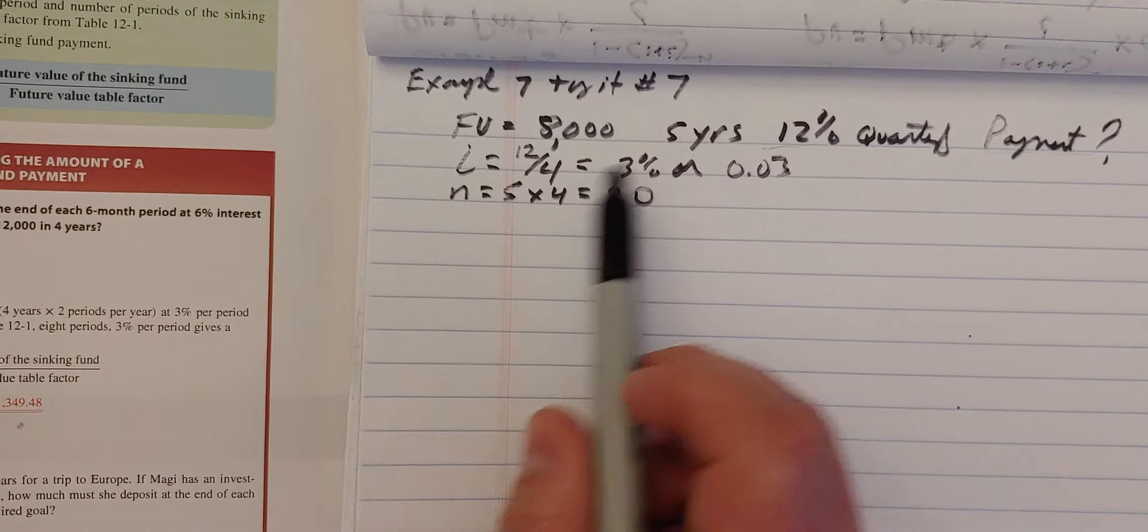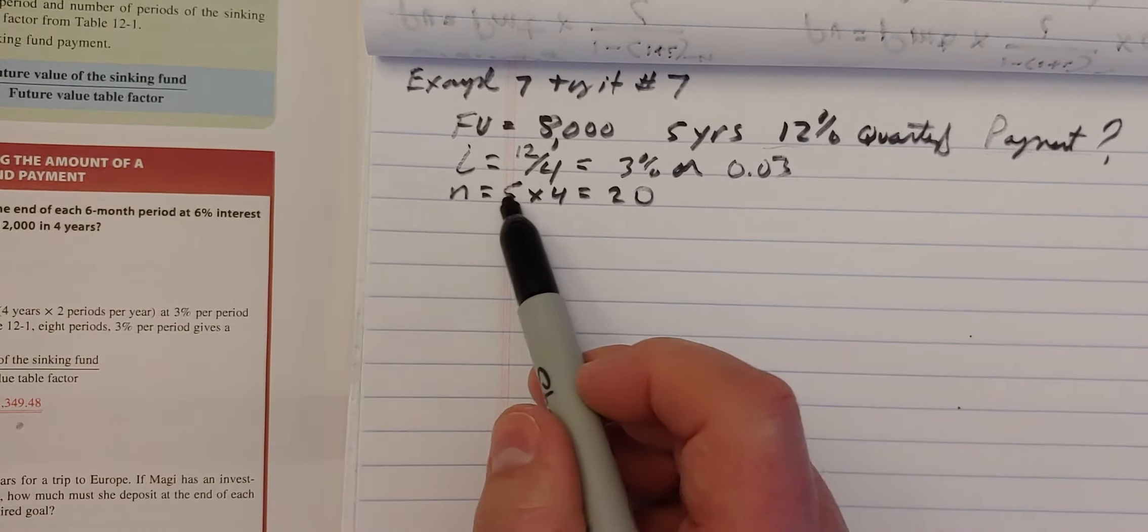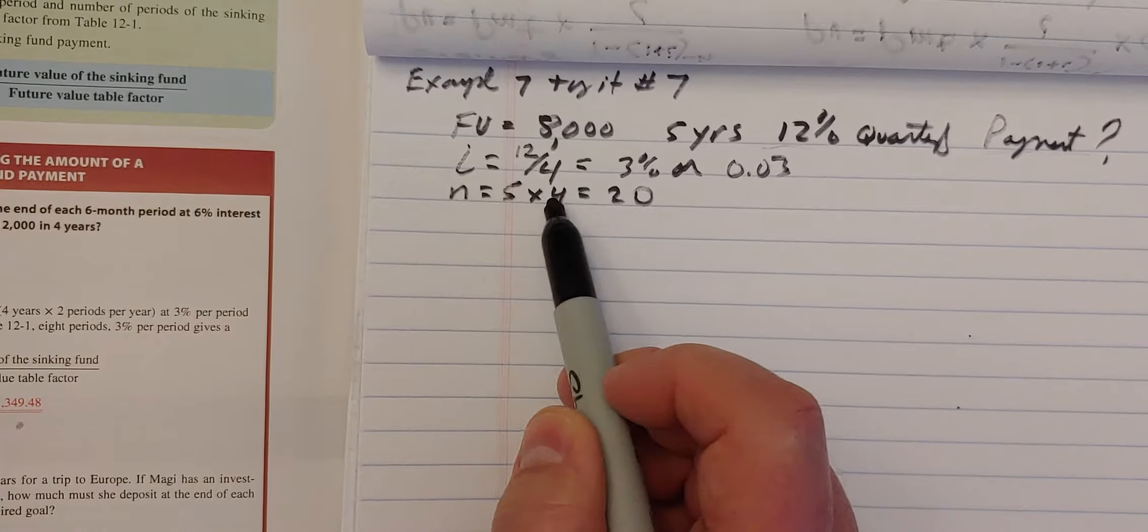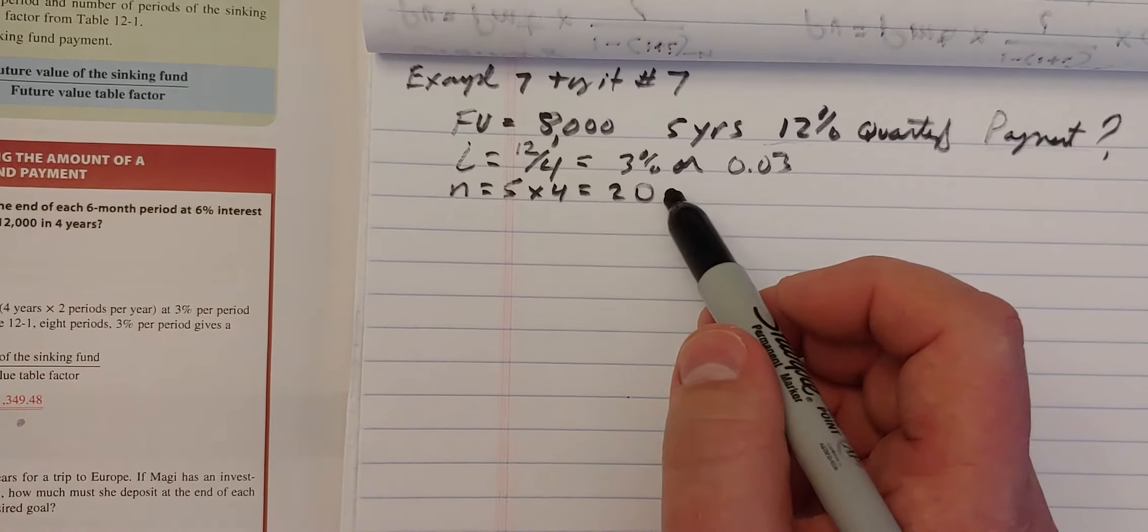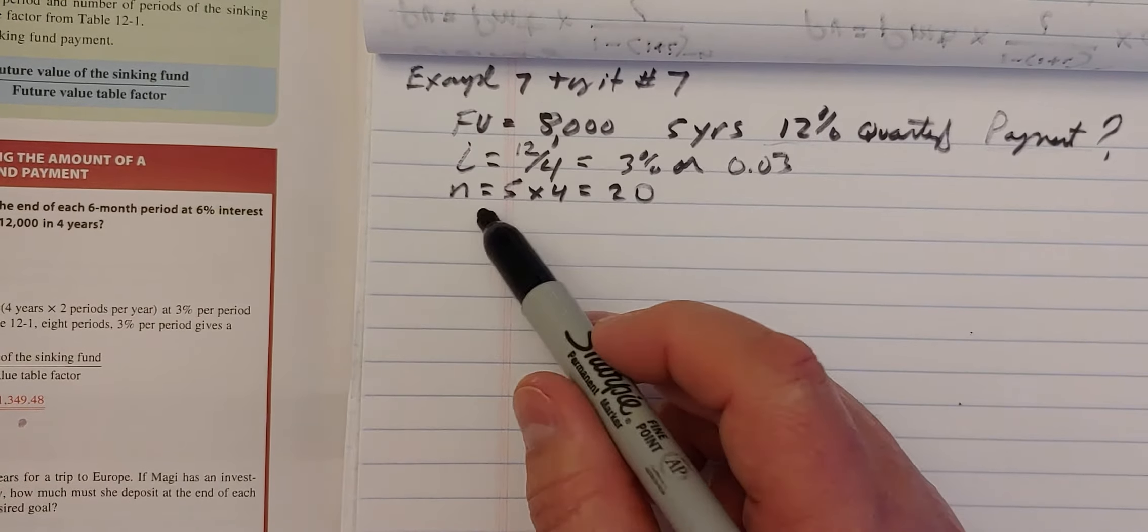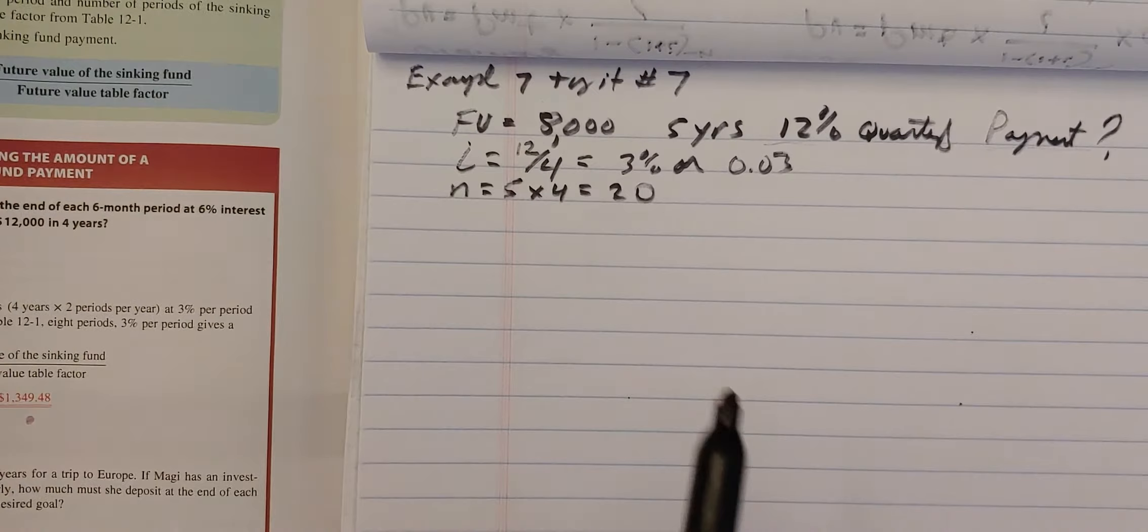And it's for five years. And since it's quarterly, that's four times a year. So five times four means there's going to be 20 compounding periods. So we need to look up the column of 3% and the row of 20 compounding periods.